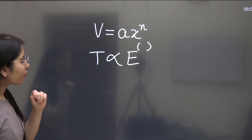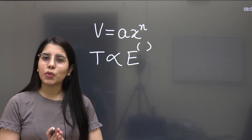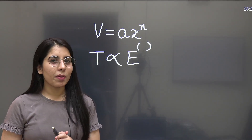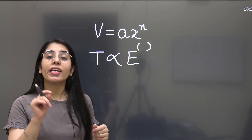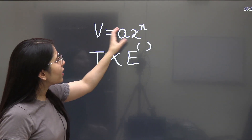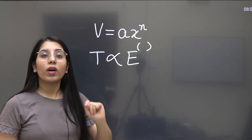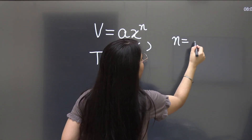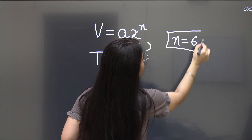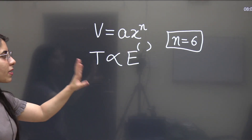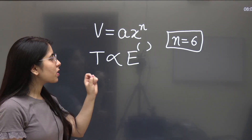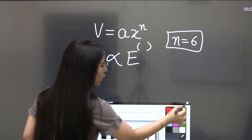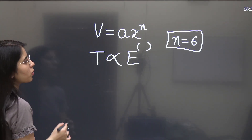So basically, do you know that process? Right now in the comment section, you can tell me if you know it or not. And if yes, for n equal to 6, what will be your answer? You just need to tell me the dependency on E for the time period. For n equal to 6, we will be finding it later on, but let me explain the steps first.